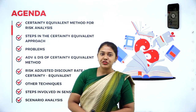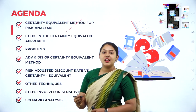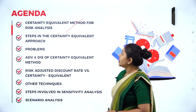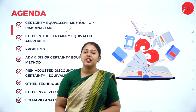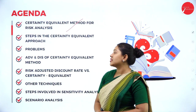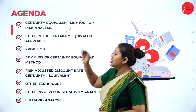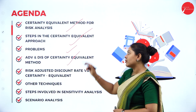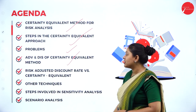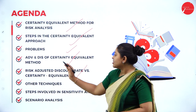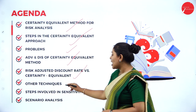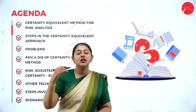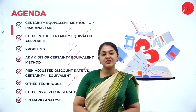Moving forward, the agenda for today's discussion. As I told you in the last class, we will be discussing the other technique — the certainty equivalent approach, which is your conventional technique. The second technique is the certainty equivalent method for risk analysis, the steps in the certainty equivalent approach, problems based on that, the advantages and disadvantages, risk adjusted discount rate versus the certainty equivalent approach, and the other remaining techniques — sensitivity analysis and scenario analysis.